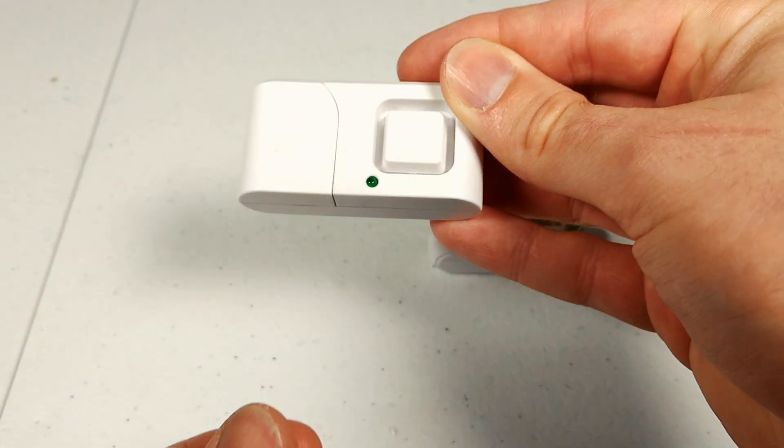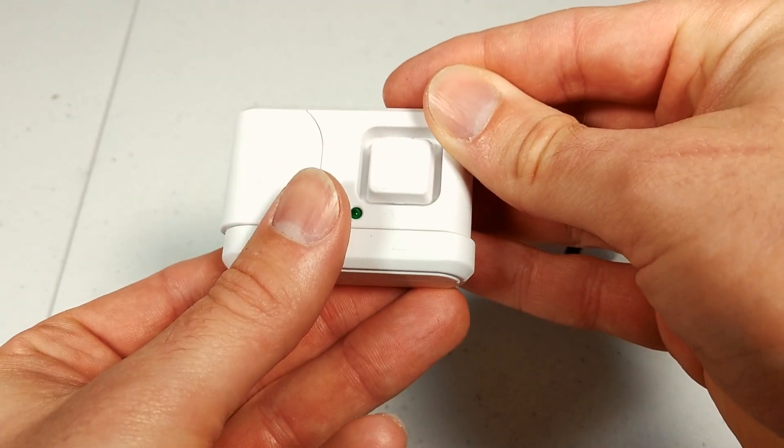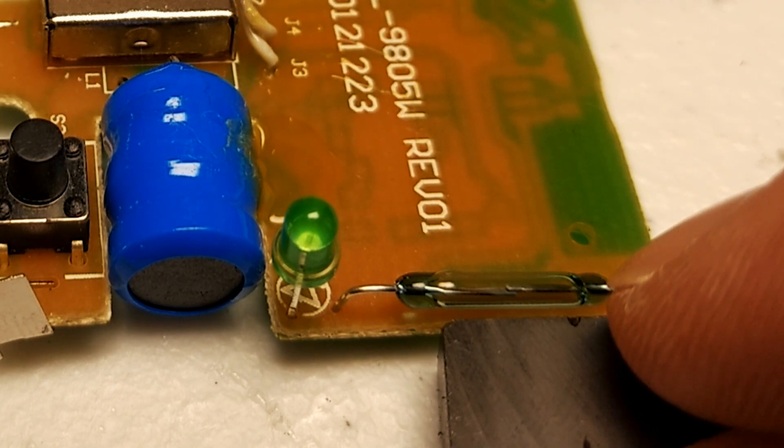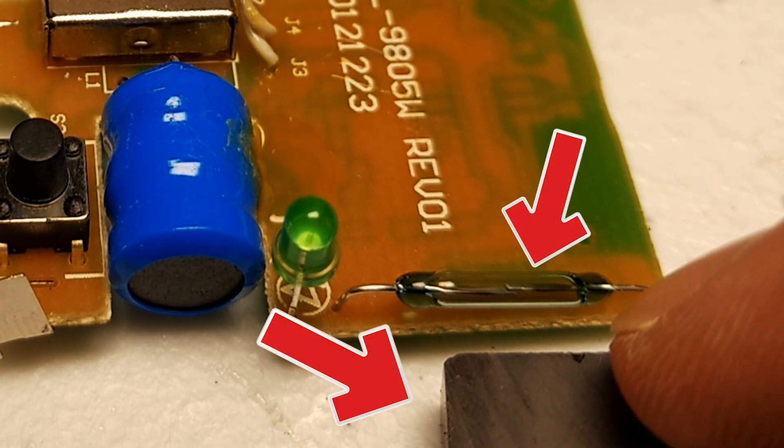We know that the sensor alarms when two contacts are separated, but why? A teardown of our cheap GE sensor reveals two vital components: a reed switch and a permanent magnet.